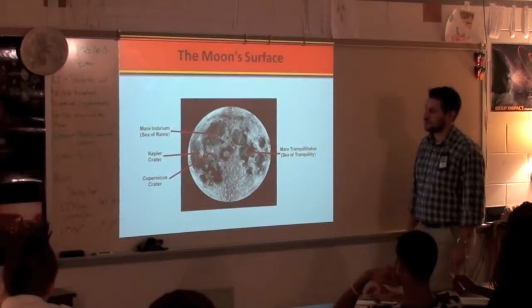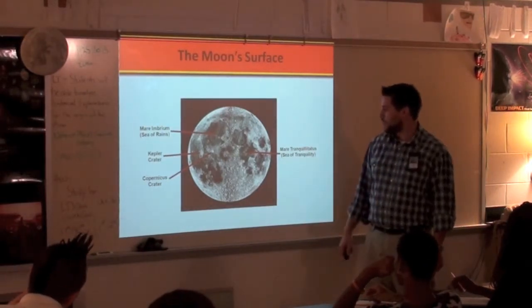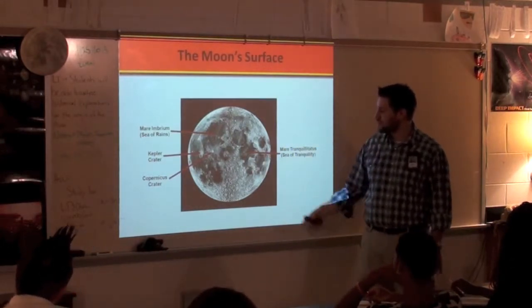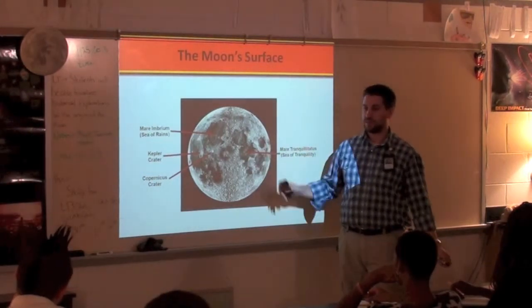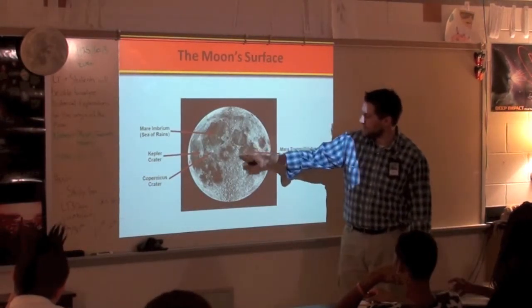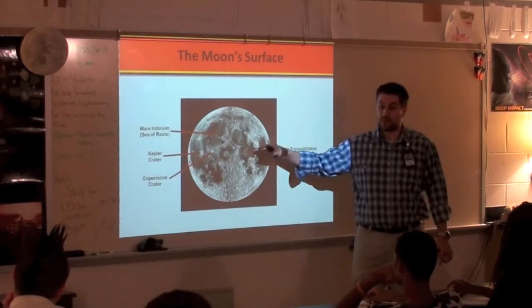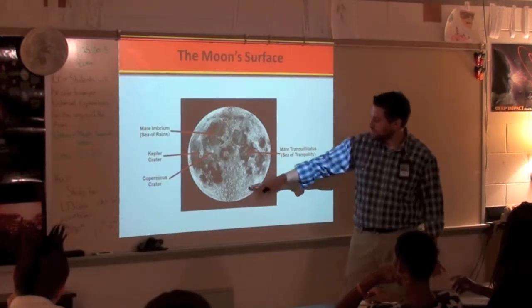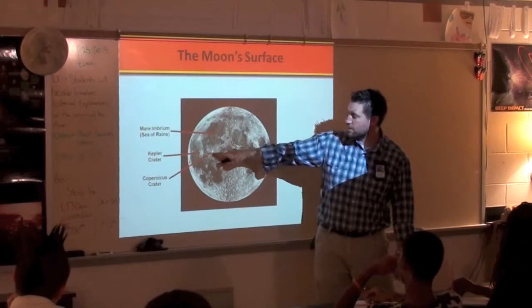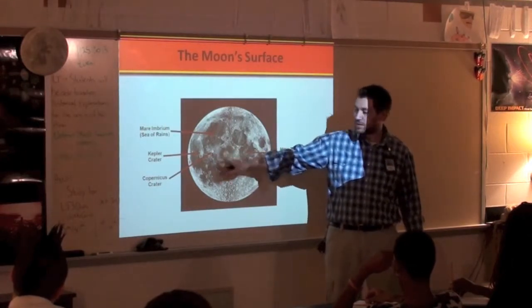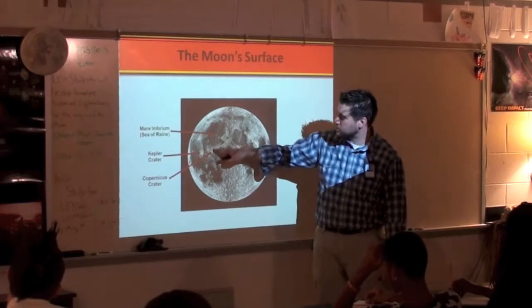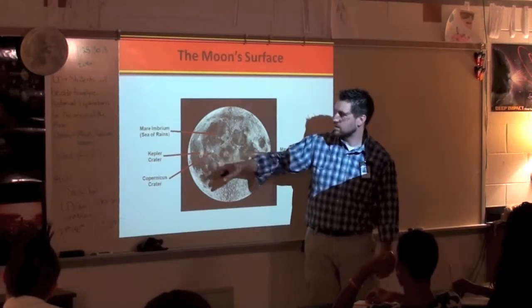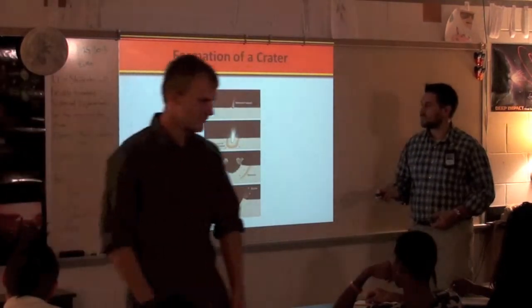A student asks why the Sea of Tranquility looks like Pac-Man — those are just features of different craters that hit the moon over time. It was perfectly round at one point, but much more recent impacts have altered it. The Copernicus crater is really big, and you can see these streaks coming off it — those are rays. Here's an older crater, Kepler's crater.